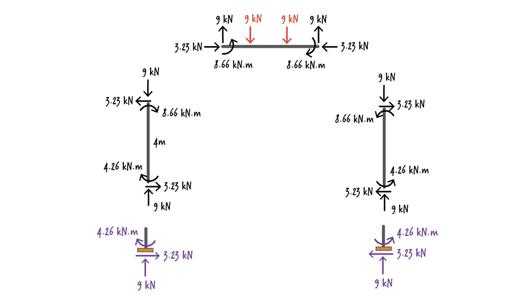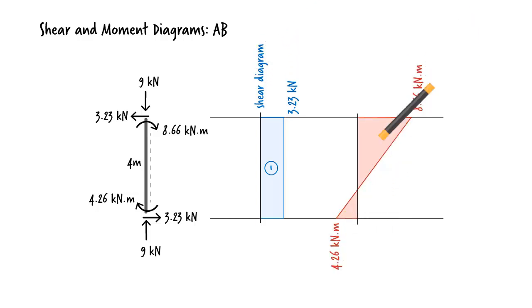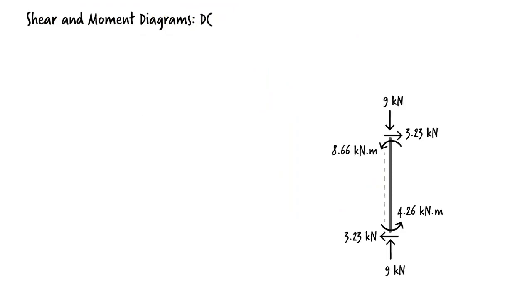Let's wrap up the solution by drawing the shear and moment diagrams for each member. For AB, shear is constant, and moment varies linearly between the two ends of the member. Moment is maximum at the upper end of the column. Member DC has shear and moment diagrams similar to AB.